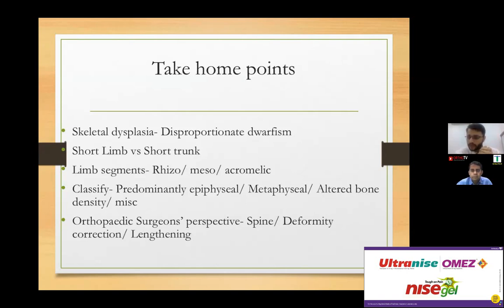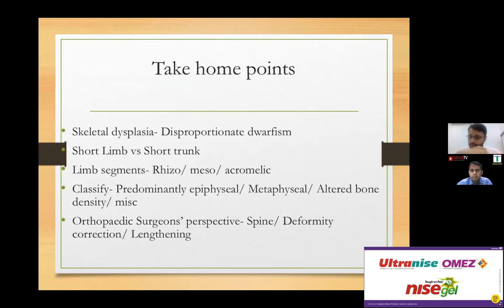In the most common case, achondroplasia, when the patient sits down, the trunk height is almost the same as any normal person. The photo where the two of us were sitting and the lady was standing clearly showed this — the trunk is nearly the same, but the lower limb is much shorter. In SED, the trunk is much shorter because the spine is greatly involved — that is a pointer toward the diagnosis of spondyloepiphyseal dysplasia.